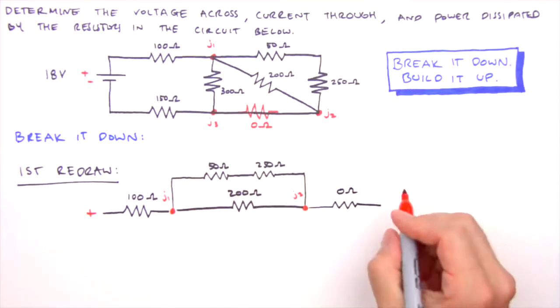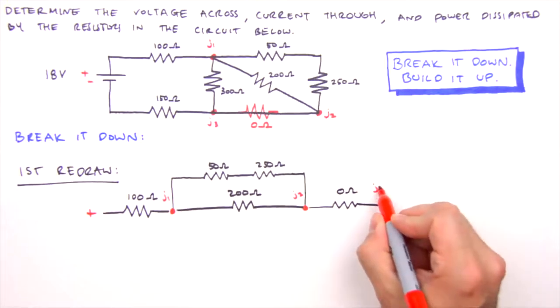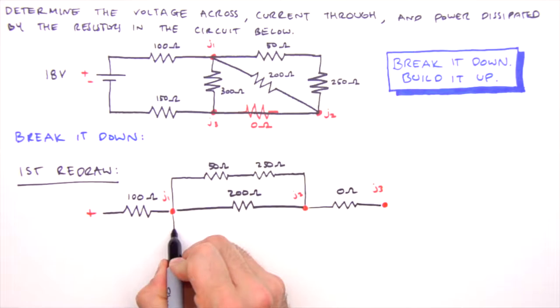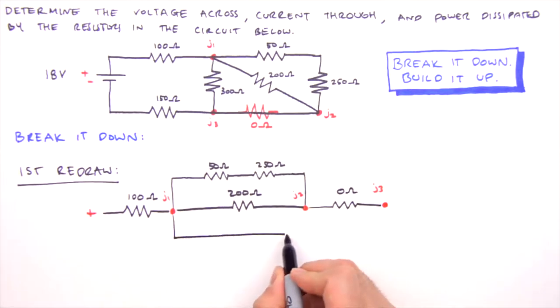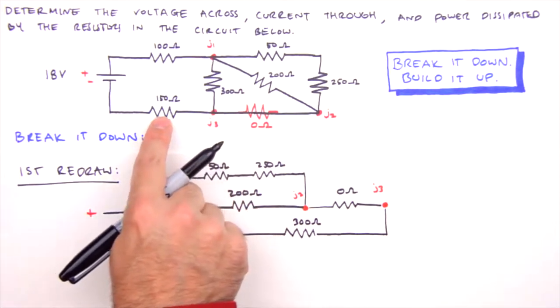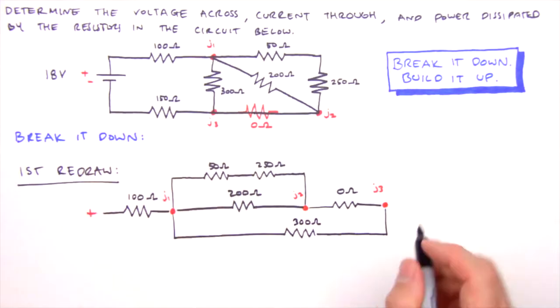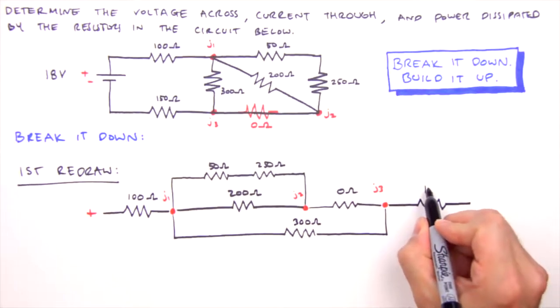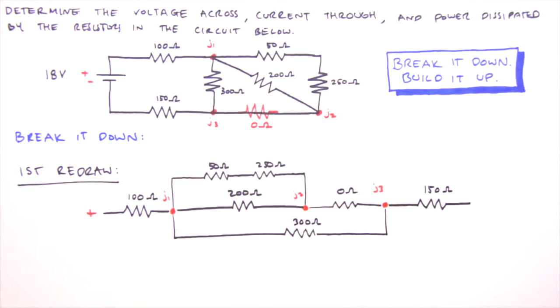And then we get to Junction 3. Between Junction 1 and Junction 3 is a single 300 Ohm resistor, so it is in parallel with the four previously drawn resistors. We'll depict this by dangling one long leg from Junction 1 and Junction 3. Finally, following Junction 3, we have a single 150 Ohm resistor leading us home to the negative side of the battery. So we draw the 150 Ohm resistor here and finish with the negative side of the battery on the right.